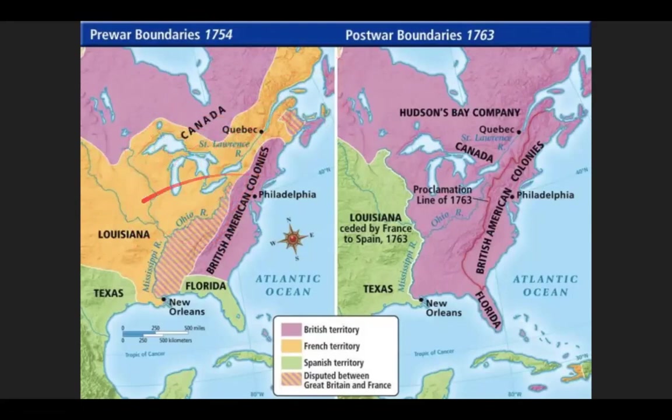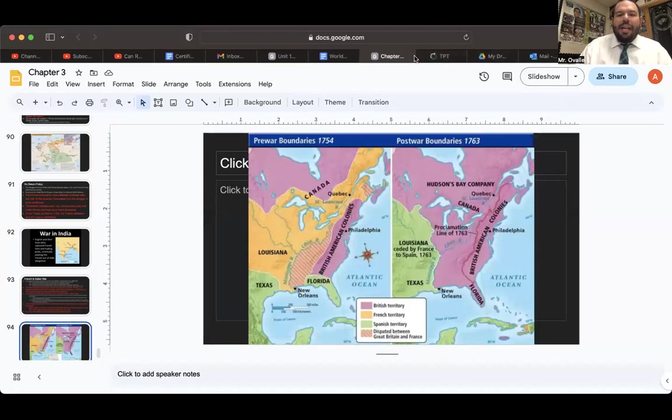That concludes this lecture. The notes you just took about the French and Indian War and the Seven Years War will play a part in understanding the foundation of the American Revolution and the French Revolution. Those enlightened monarchs — enlightened absolutists, enlightened despots, whatever you want to call them — are central to what comes next. Homework is page 116, questions 2 through 4. If you enjoyed this, hit the like button, leave a comment, subscribe, and I'll see you in the next one.